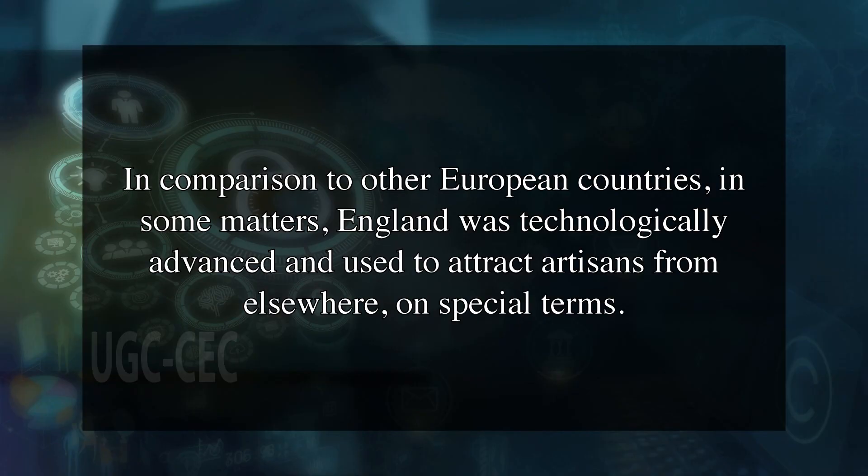The laws and administrative procedures relating to IPR have their roots in Europe. The trend of granting patents started in the 14th century. In comparison to other European countries, England was technologically advanced and used to attract artisans from elsewhere on special terms. The first known copyrights appeared in Italy. Venice can be considered the cradle of the IP system as most legal thinking in this area was done here. Laws and systems were made here for the first time in the world and other countries followed in due course.